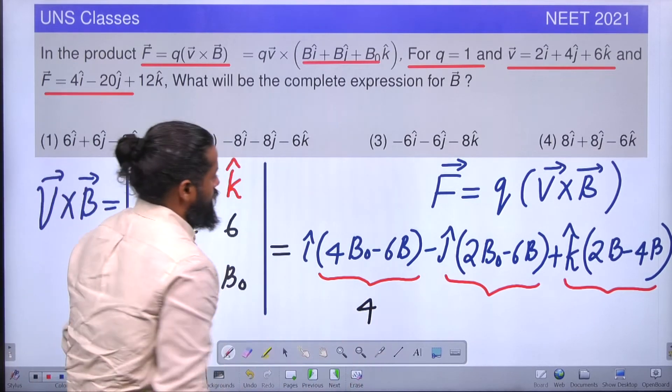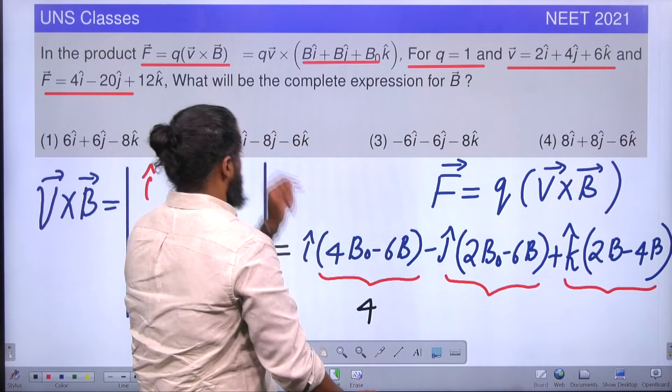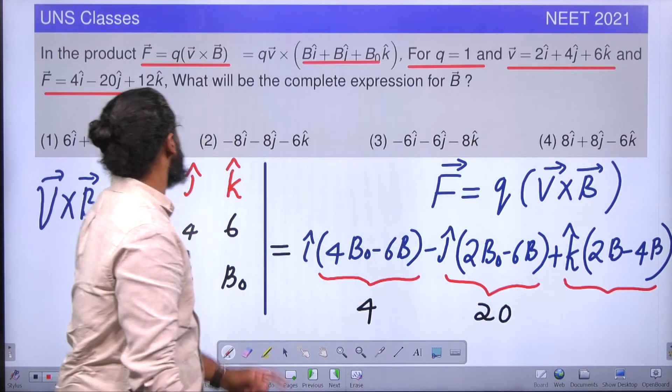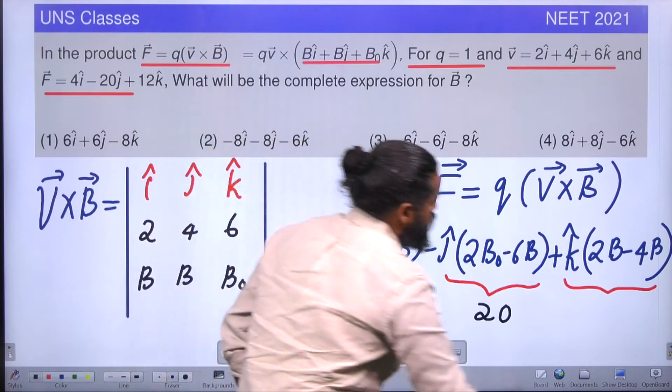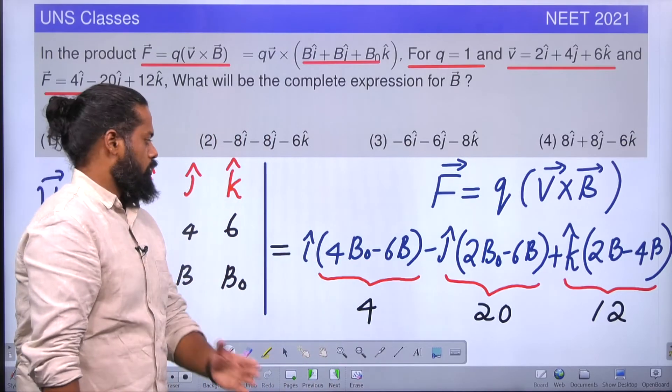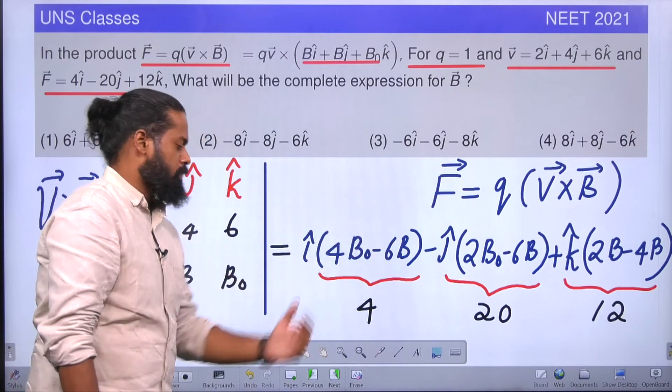Z also will be the same. That means we can easily say that this is going to be equal to 4, and minus is already there, so we can say that this quantity is going to be equal to 20. The magnitude of that number, then this is going to be exactly 12. From there we can easily come to the solution. Let us go to the next page. See, 4B₀ - 6B is equal to 4.